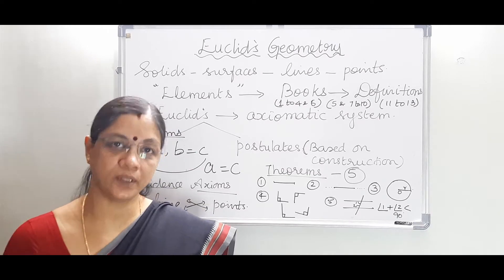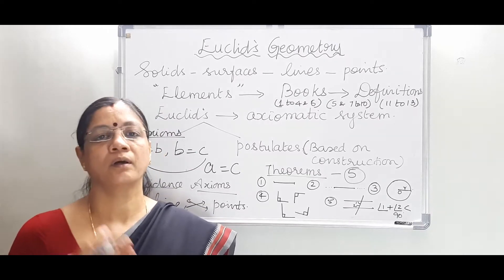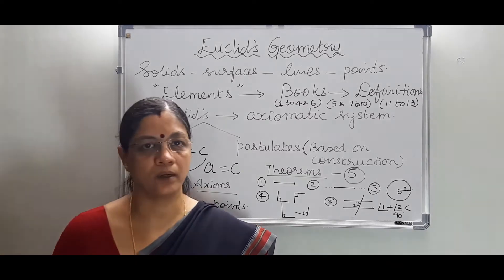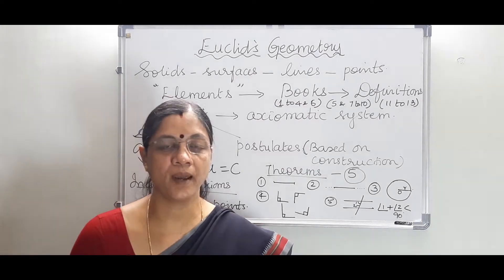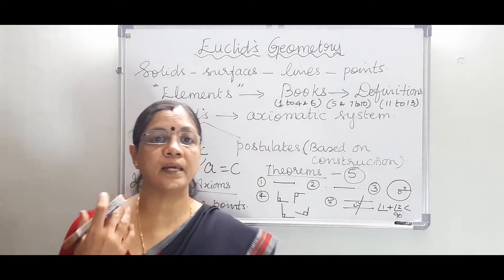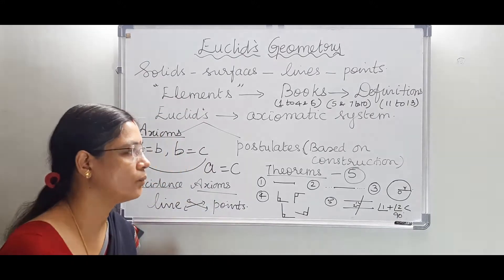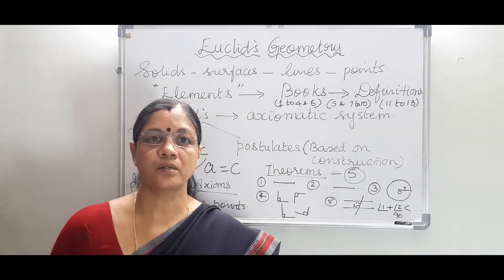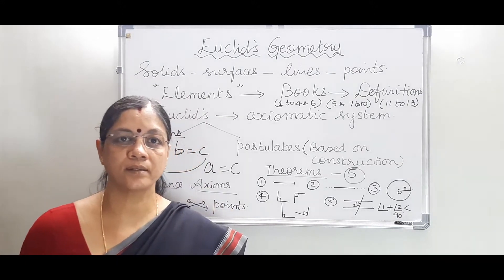And then the next axiom is something we definitely know: the whole is always larger than the part. So a whole thing is definitely larger than any of its parts. This is also an axiom.